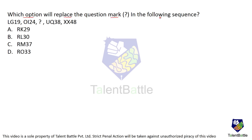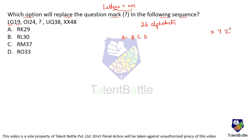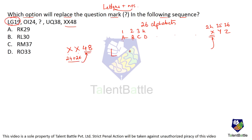Which option will replace the question mark in the following sequence? There are letters as well as numbers. Whenever you have letters plus numbers, there is a very high chance the numbers relate to the position numbers of the letters. The English alphabet has 26 letters from A to Z with position numbers 1 through 26. For example, position number of X is 24.